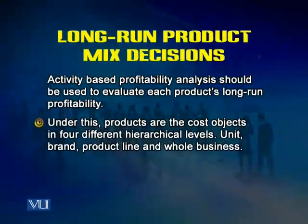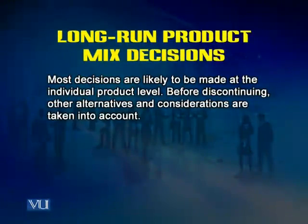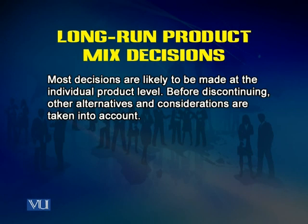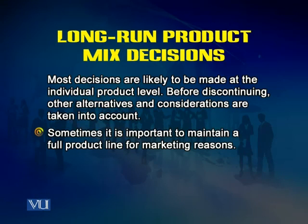Under activity-based costing, products are cost objects at four different hierarchical levels: unit, batch, product line, and whole business. Most decisions are likely to be made at the individual product level. Before discontinuing, other alternatives and considerations are taken into account. Sometimes it is important to maintain a full product line for marketing reasons. Long-range decisions will be in a different light with many different factors involved, and especially discontinuing decisions will need to be carefully considered.